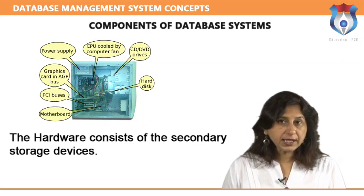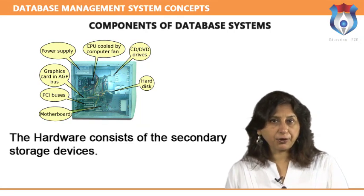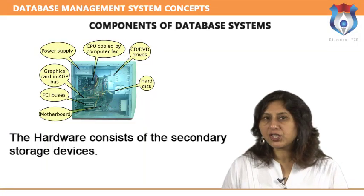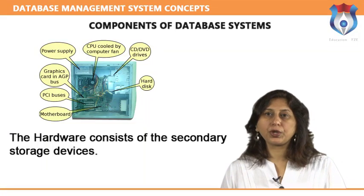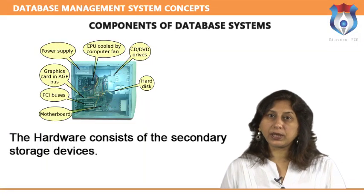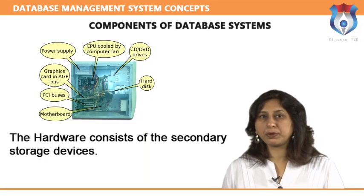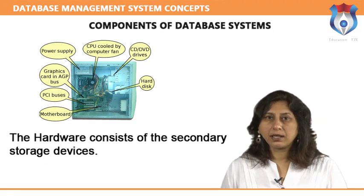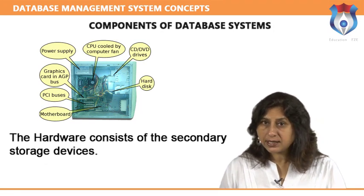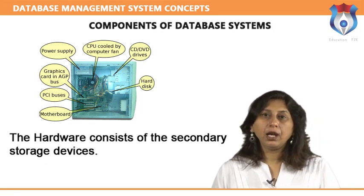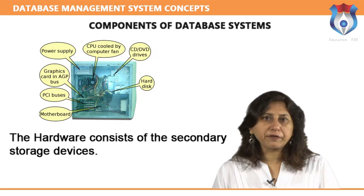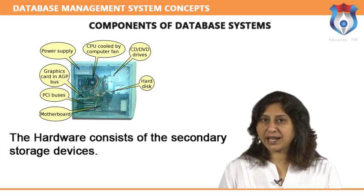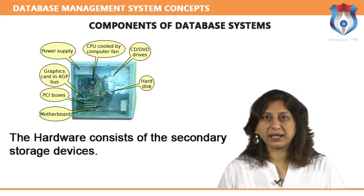Components — hardware: the hardware consists of secondary storage devices such as magnetic disks, hard disks, zip disks, floppy disks, optical disks, CD-ROMs, magnetic tapes, etc., on which data is stored, together with input/output devices like mouse, keyboard, printers, processors, and main memory, which are used for storing and retrieving data in a fast and efficient manner.